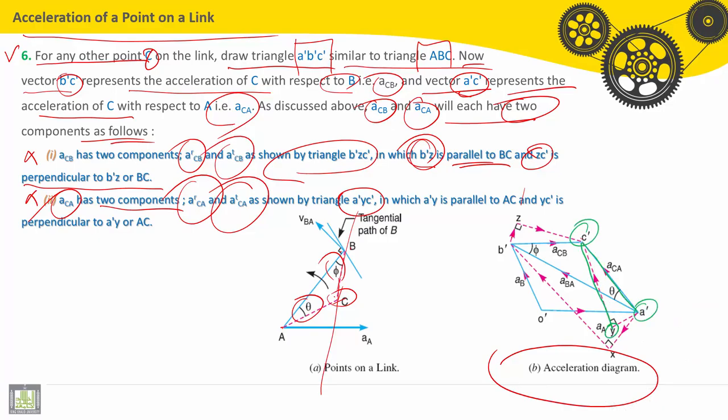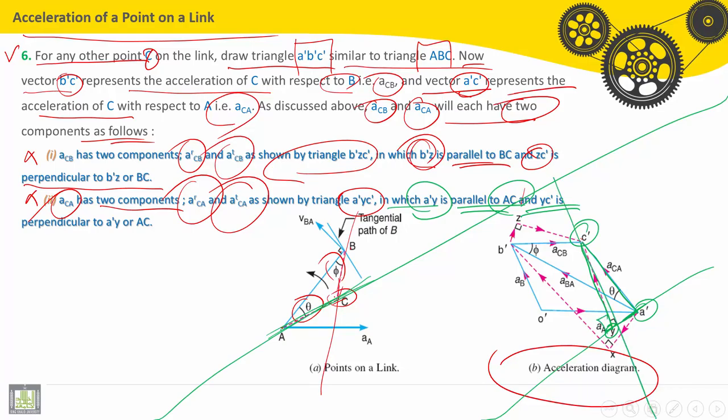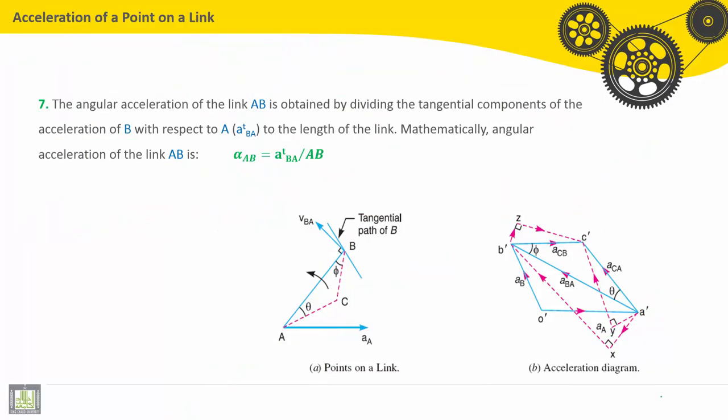So how to find Y? A-Y is parallel to AC. And Y-C-dash is perpendicular, so it is perpendicular here. And then both intersect in Y, and we'll find this triangle A-Y-C-dash.